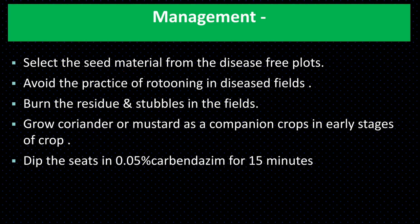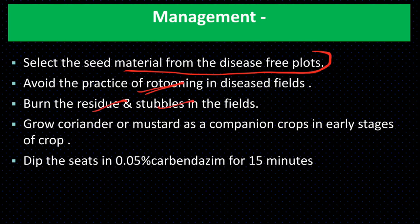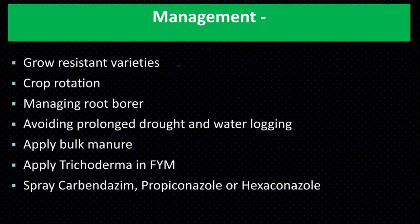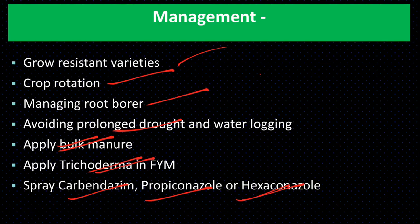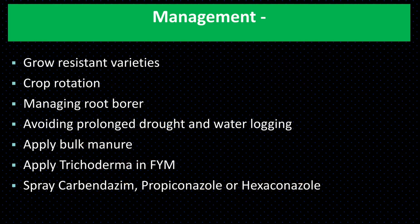Management: integrated disease management — selection of seed from disease-free plots; avoid ratooning; burn residue and stubble; grow coriander or mustard as companion crop; dip planting material in 0.05% carbendazim for 15 minutes; grow resistant varieties; crop rotation with non-host; manage root borer; avoid prolonged drought and waterlogging; apply bulky manure; apply Trichoderma; spray carbendazim, propiconazole, and hexaconazole. The management is similar to wilt disease since both are caused by Fusarium species.